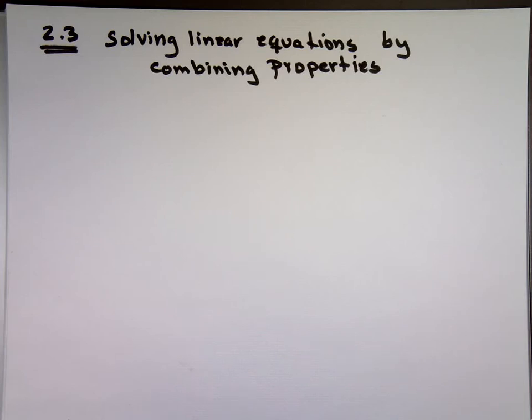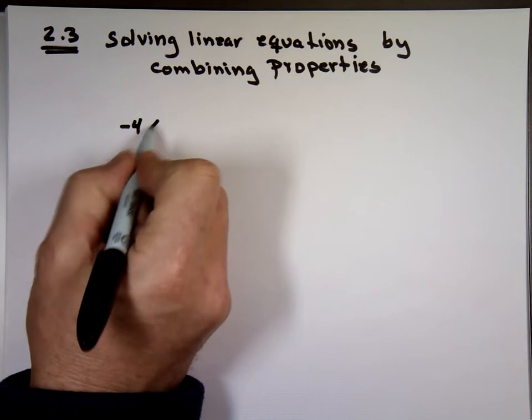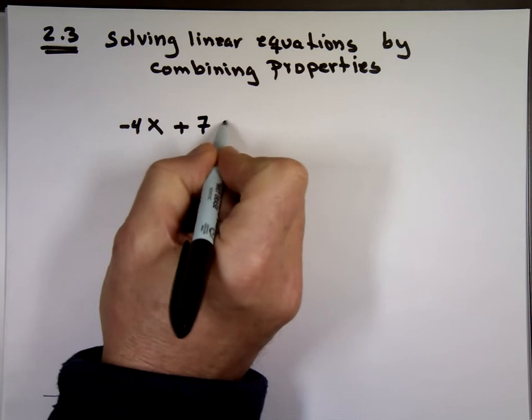We actually start talking about this in section 2.2. We did a few examples of that. So we're going to continue with it, put more challenging problems. But I'll start just quickly with a simpler one, negative 4x plus 7 equals 3.